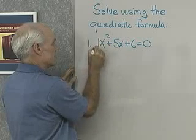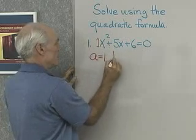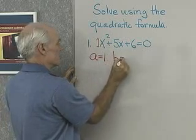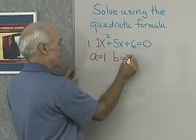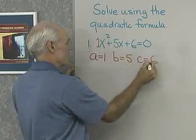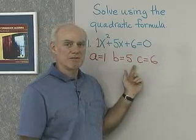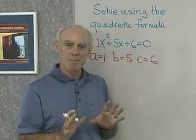a is 1 — that's the coefficient of the squared term. b is equal to 5, and c is equal to 6. So, a is 1, b is 5, c is 6.